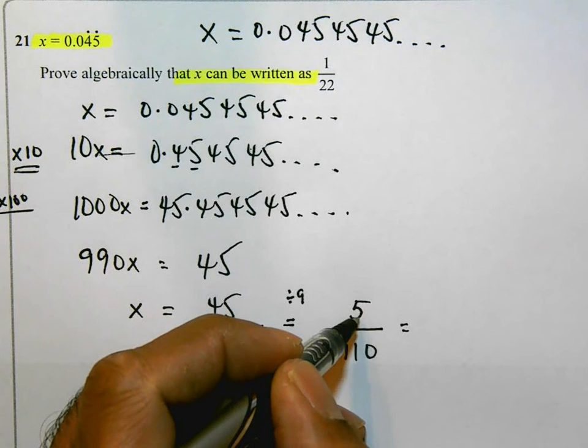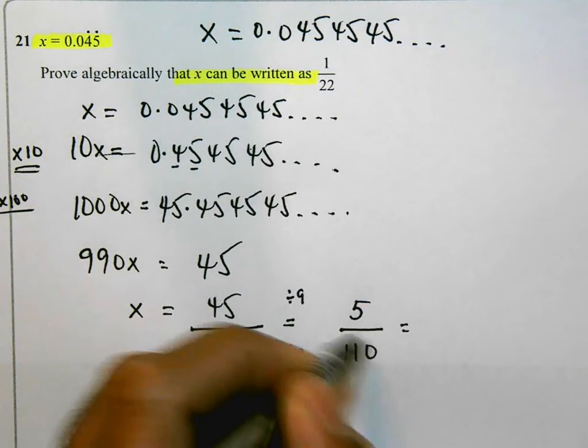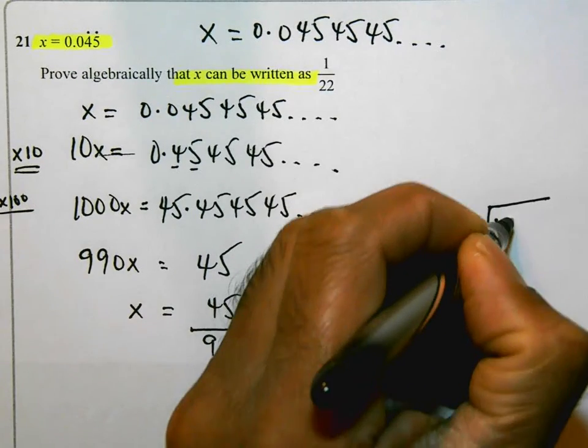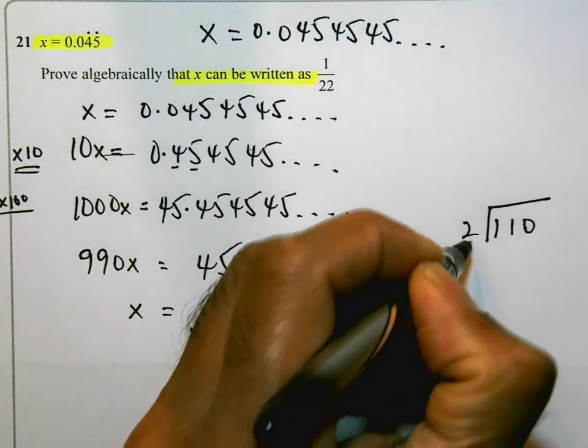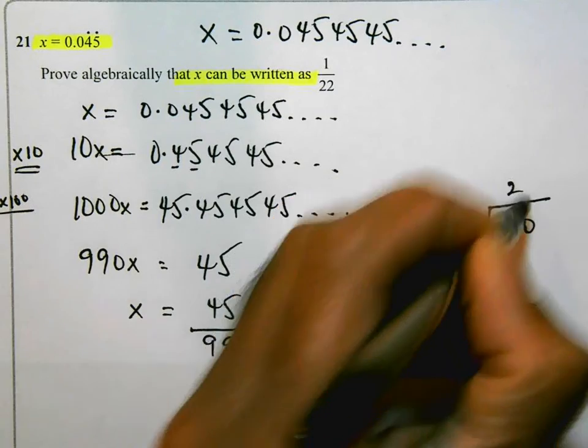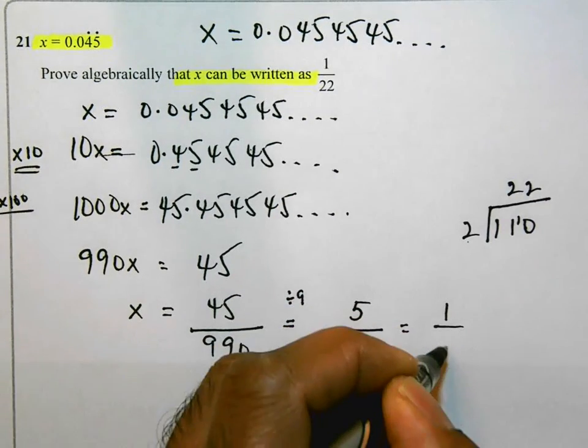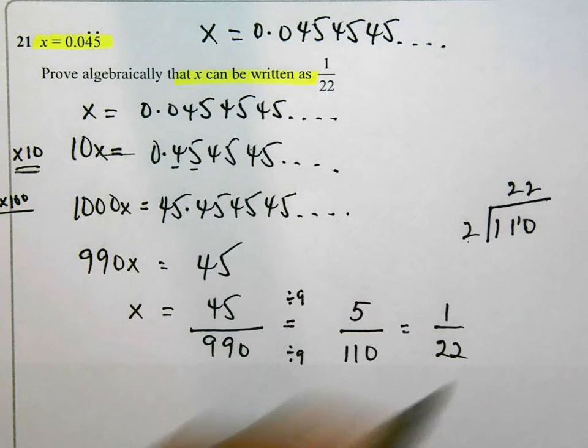I know 5 can go into 5 once, but could 5 go into 110? If I do a bus stop method here, 5 into 11 is 2, carry 1. 5 into 10 is 2. So, yep, this could be written as 1 over 22.